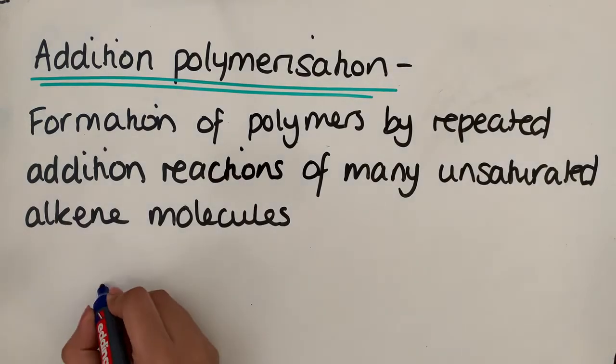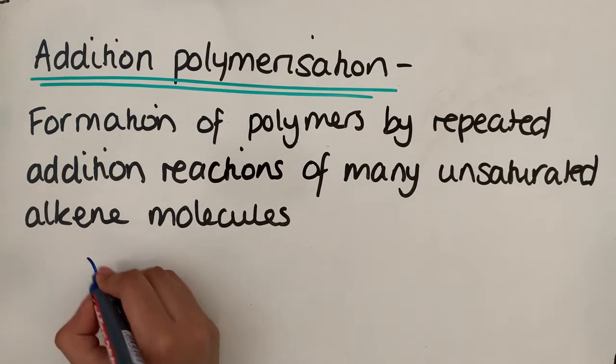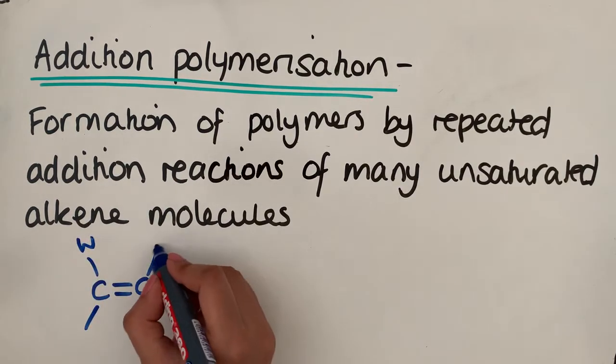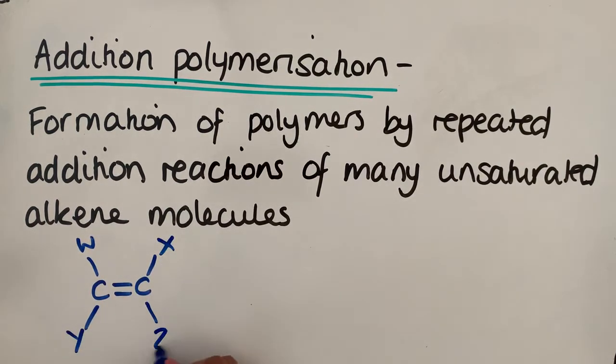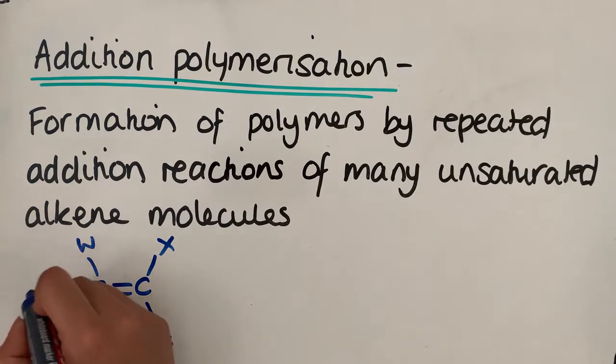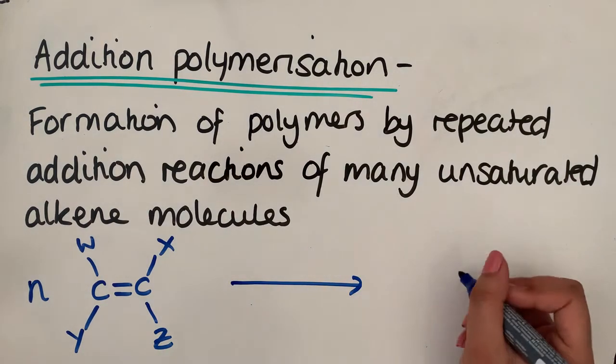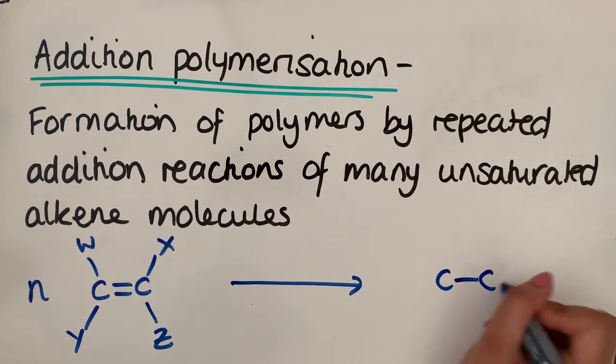The general equation for this is where we have many of our monomer. So I'm just going to use W, X, Y and Z. So we have N lots of our alkene monomer. And then under high temperature and pressure, we form an addition polymer.